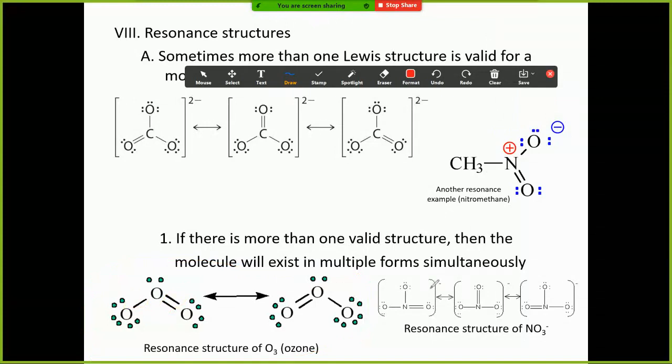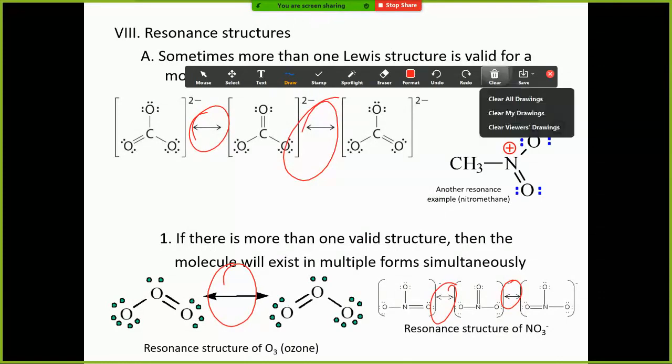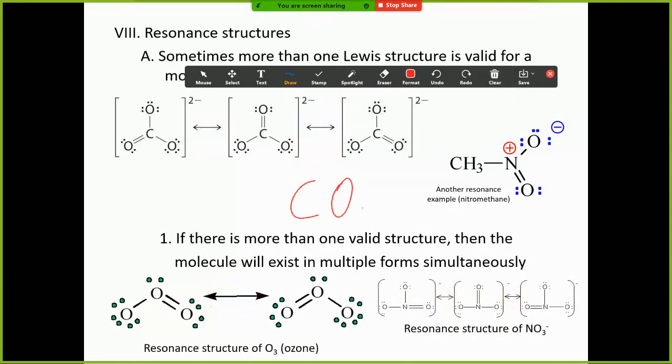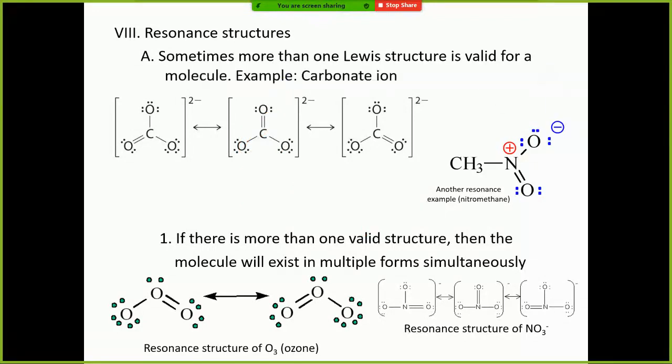But look, that bond could be here or it could be here. And so, that's why you've got both forms of it drawn. Or this is NO3-, aka the nitrate ion. And these represent the fact that these are resonance structures. Now, on an exam, a student would be given a formula, such as CO3 2-, and expected to draw a structure and recognize that the double bond could be in multiple places, therefore recognizing that it has the potential to have resonance.